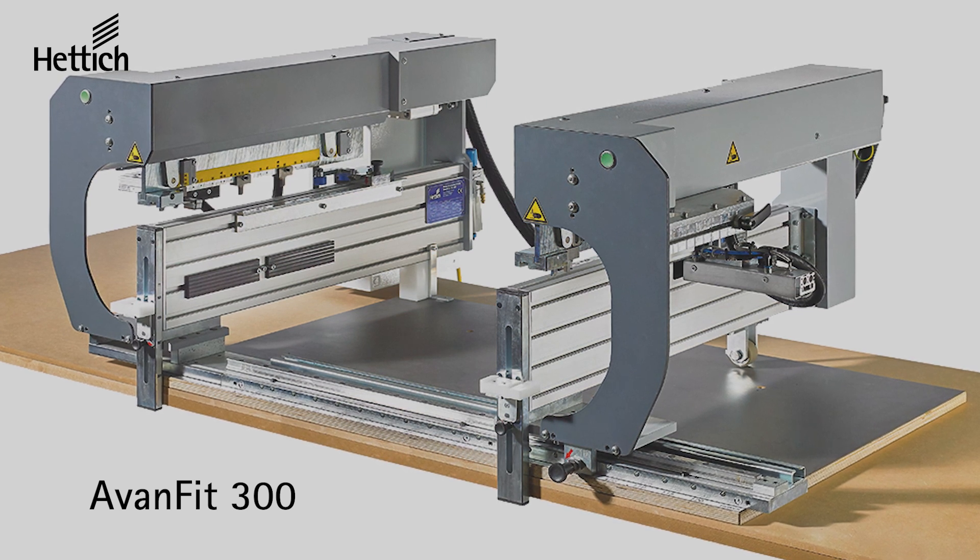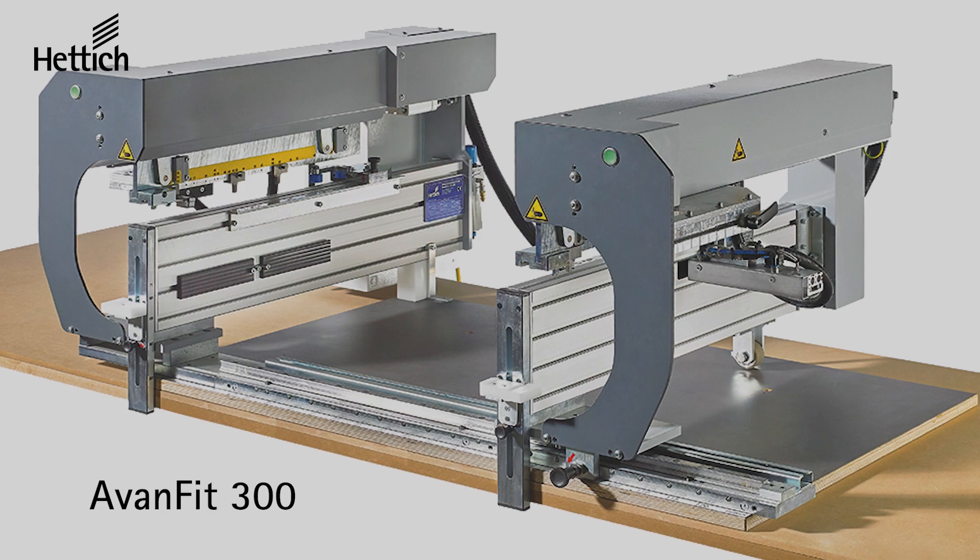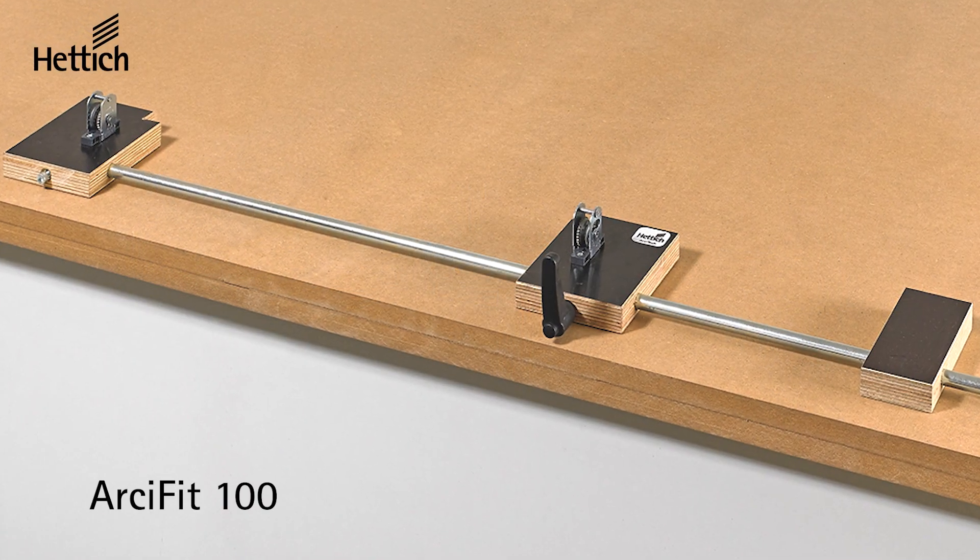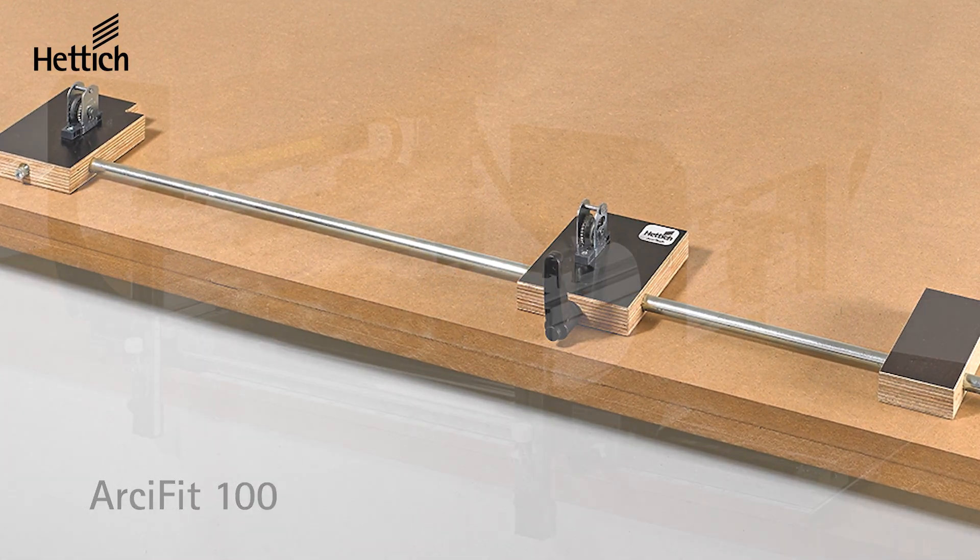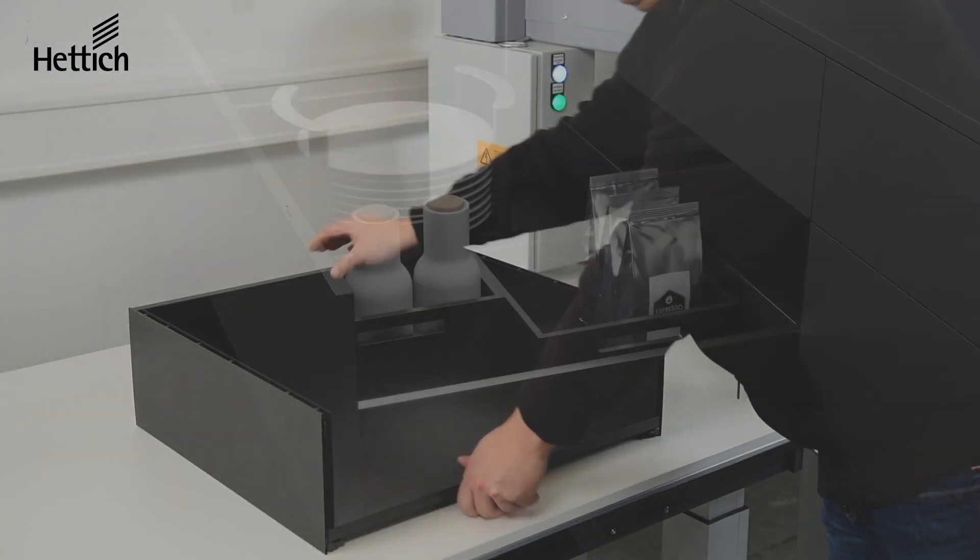The AVENFIT 300 is one of our many assembly aids for the various Hettich drawer systems. This one is specifically designed for the new Avantech U drawer system. The Avantech U drawer system has three different types of assembly aids for all budgets.